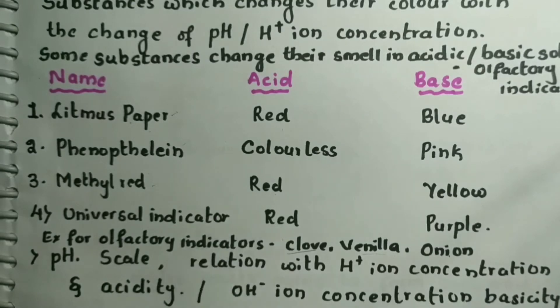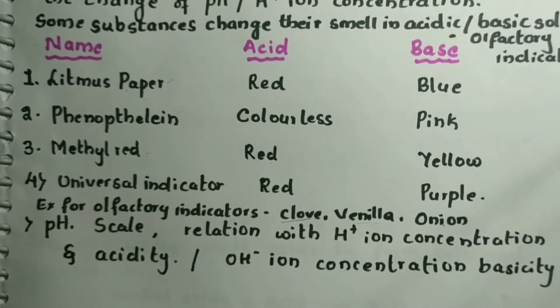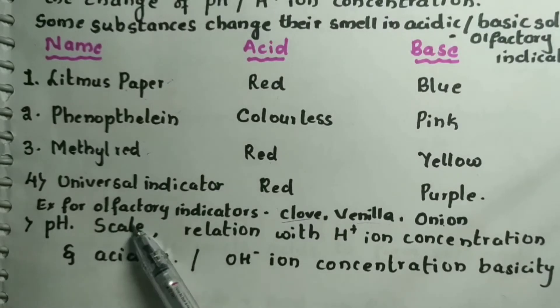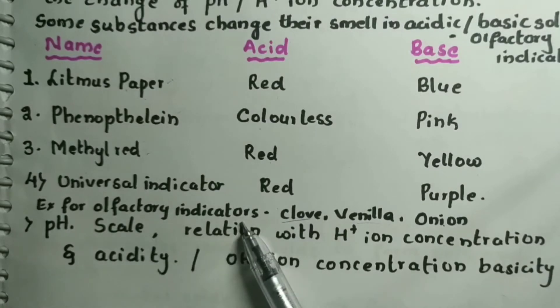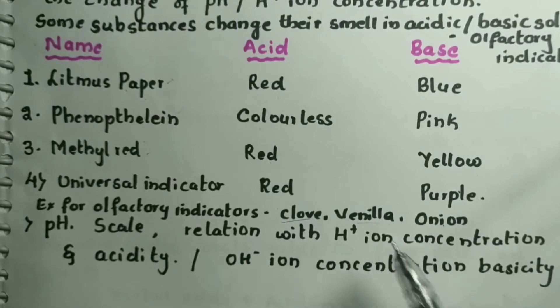Some indicators change their smell when the pH or H+ ion concentration changes. These are called olfactory indicators. Some examples of olfactory indicators are clove, vanilla and onion.